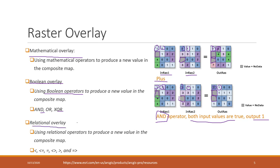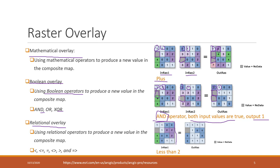We can also do relational overlays. For example, with one input we can check if each cell value is less than two. If a cell is less than two, the result is one (true). If a cell is not less than two, the result is zero (false). And again, a cell with no data will produce no data in the output.